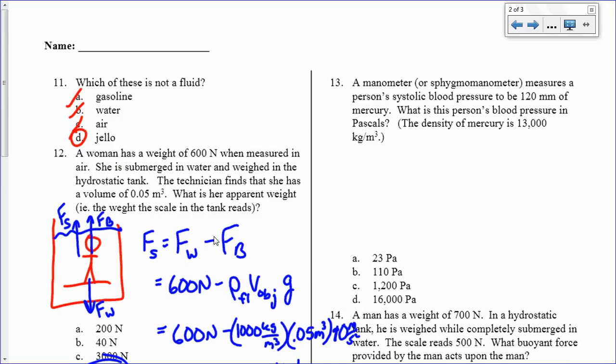A manometer measures a person's systolic blood pressure to be 120 millimeters of mercury. What is this person's blood pressure in pascals? This pressure is equal to rho times g times h. And when I'm measuring blood pressure in this way, that refers to the height of that column. So I want to know what is the pressure in pascals. That's going to be this value. So, I'm going to take the density of mercury. It's 13,000 kilograms per cubic meter. So, it's very dense. More than 10 times the density of water.